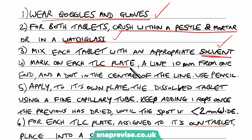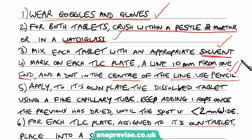Mark on each TLC plate a line 10mm from one end and a dot in the centre of the line using pencil. That's possibly one or two marks there. The line is very important because that's how we measure the distance the pigment and the solvent front has moved. Using pencil is very important because if we use pen, the ink pigments can run with our other pigments and confuse the results.